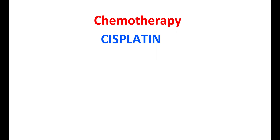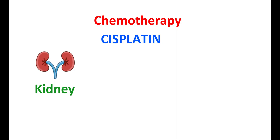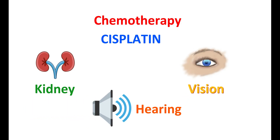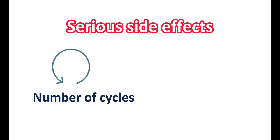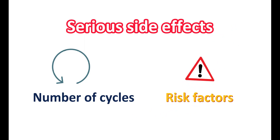Many anti-cancer agents are toxic in nature, including cisplatin. Cisplatin can affect various organs in the body, including the kidney, and it can also affect vision and hearing. Serious side effects produced by cisplatin depend on the number of cycles for which it is used and the coexisting risk factors. Today we are going to discuss the important side effects of cisplatin and how they are managed.